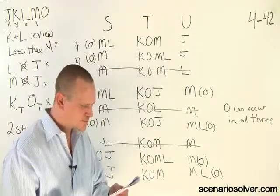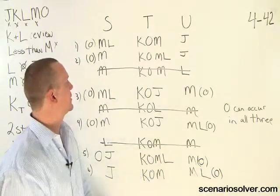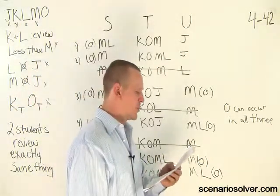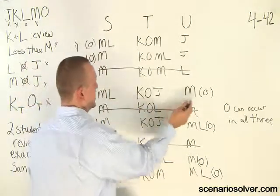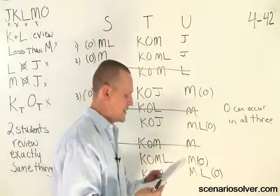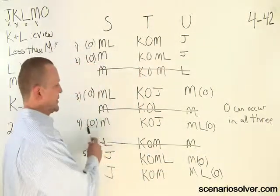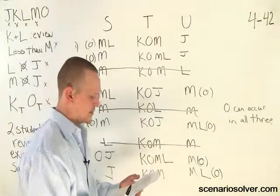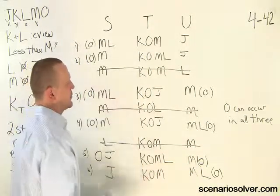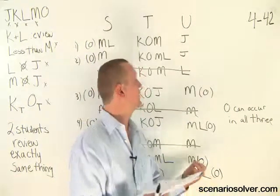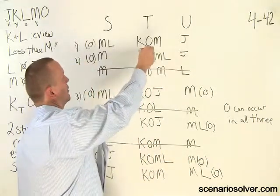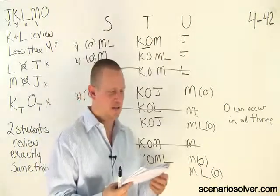Question 20: which one of the following must be true? A — J reviews more plays than L. Well, we know that J and L review the same amount, which is one. B — M reviews more of the plays than J. Absolutely. M has to review two and J reviews one. Nothing will ever change that, so that has to be the answer. C — M reviews more of the plays than O. No, it actually could be that O reviews more than M. D — O reviews more of the plays than J. O can only review one or review three, so it doesn't have to be. O can review the same amount as J. E — O reviews more plays than K. O and K can review the exact same amount. So again, we know that B is the answer.